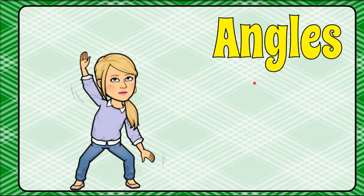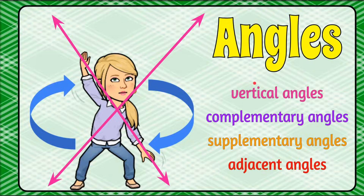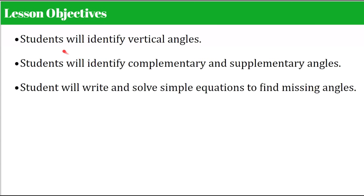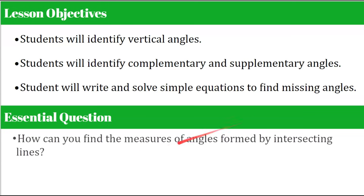Welcome to The Magic of Math. Today we're talking about angles — specifically vertical angles, complementary angles, supplementary angles, and adjacent angles. Our objectives are: you will identify vertical angles, identify complementary and supplementary angles, and write and solve simple equations to find missing angles. As we go through the lesson, think about this question: How can you find the measures of angles formed by intersecting lines?